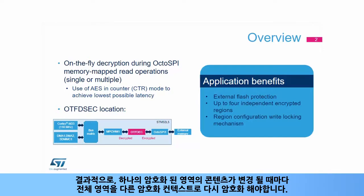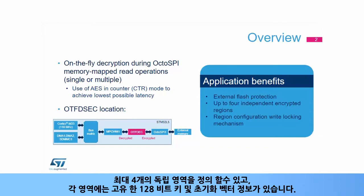As a consequence, each time the content of one encrypted region is changed, the entire region must be re-encrypted with a different cryptographic context — key or initialization vector. Up to four independent regions can be defined, each with their own 128-bit key and initialization vector information.